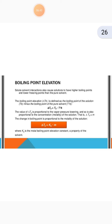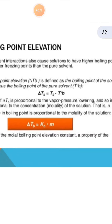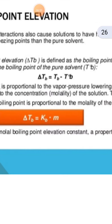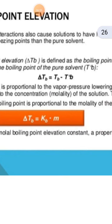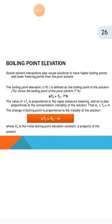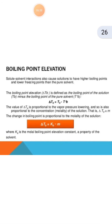The change in boiling point is proportional to the molality of the solution. Then, ΔTb = Kb × m, where Kb is the molar boiling point elevation constant, a property of the solvent.